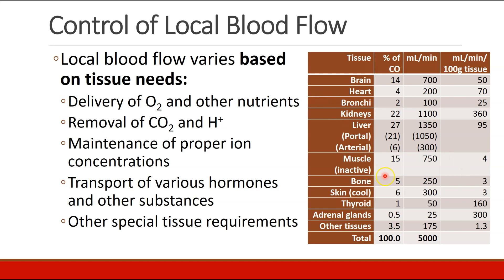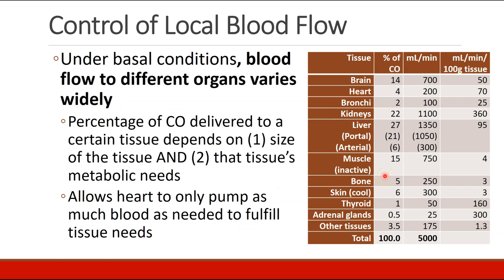This table shows us that blood flow to different organs varies quite widely, and it depends on two different things: the size of the tissue, and the needs of the tissue — in order to allow the heart to only pump as much blood as needed.